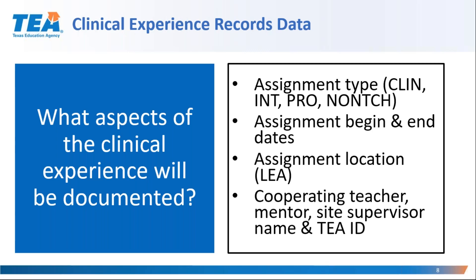The information that will be recorded in the clinical experience records you create in ECOS will be the assignment type and the assignment begin and end dates — which have been moved out of the formal observation record — and the assignment location, which is currently entered when recommending the intern or probationary certificate, and the name and TEA ID number of the campus personnel assigned to support the candidate, which would be the cooperating teacher, mentor, or site supervisor as applicable to the assignment type.